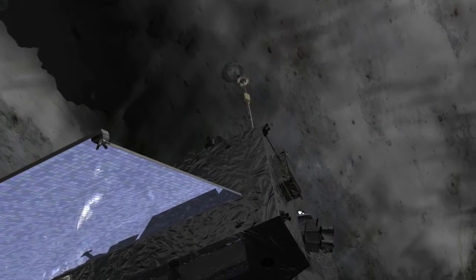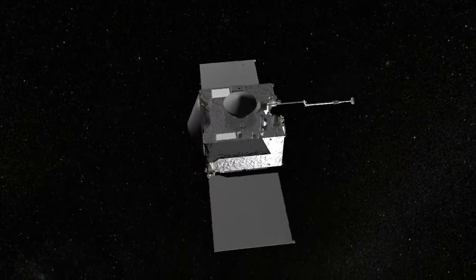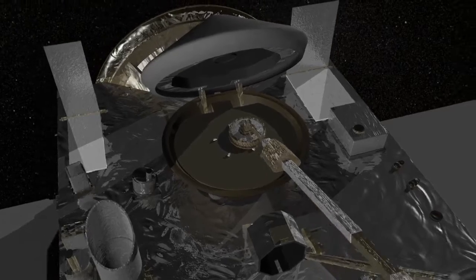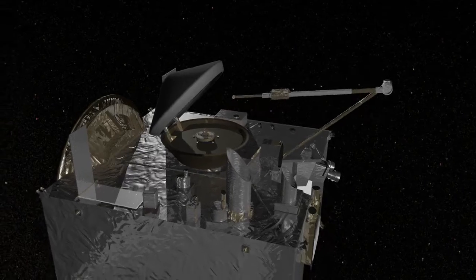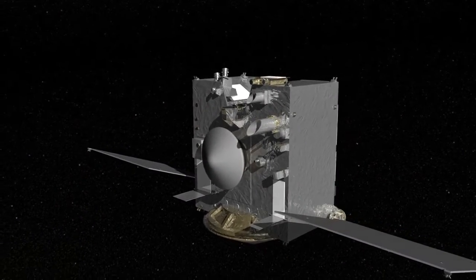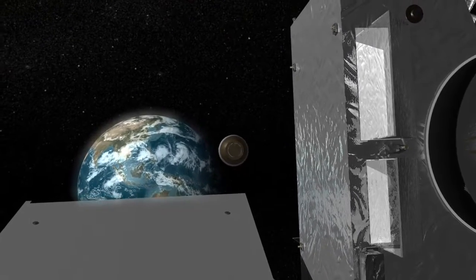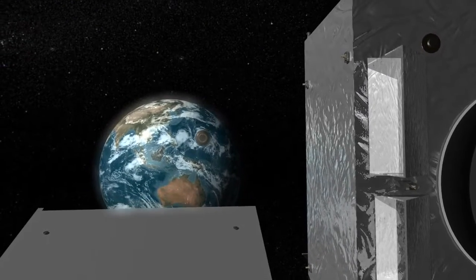After moving away from the surface, OSIRIS-REx will perform a spin maneuver to measure the mass of the sample, then it will carefully stow the TAGSAM head inside the sample return capsule and prepare for the journey back to Earth. Upon arriving home in 2023, OSIRIS-REx will release the sample, giving us a piece of the ancient solar system that will be studied for decades to come.